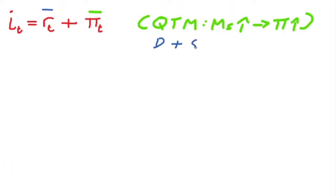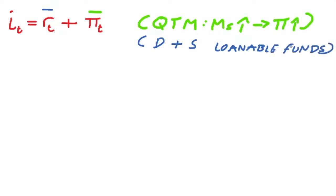The real interest rate is determined outside of the quantity theory of money. It's determined by the demand and supply of loanable funds — of credit — in the economy. So it is independently derived by the supply and demand within this market.